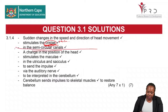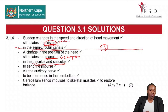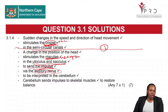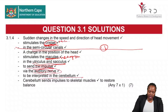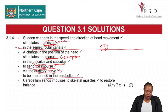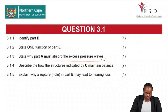The macula is stimulated in the utricle and saccule. The stimulus is converted into an impulse which is sent to the cerebellum via the auditory nerve. The cerebellum interprets the impulse and sends further impulses to the skeletal muscles so that the skeletal muscles can function to restore balance.